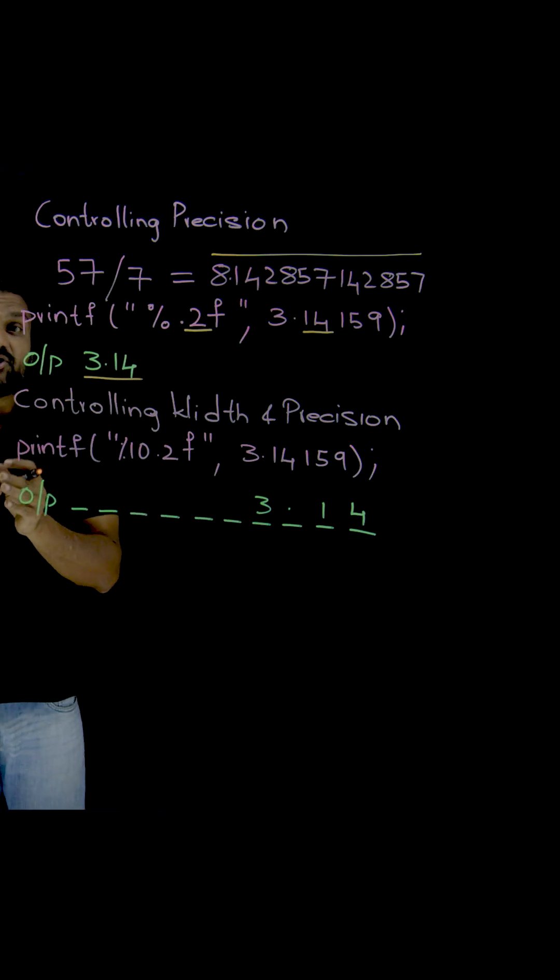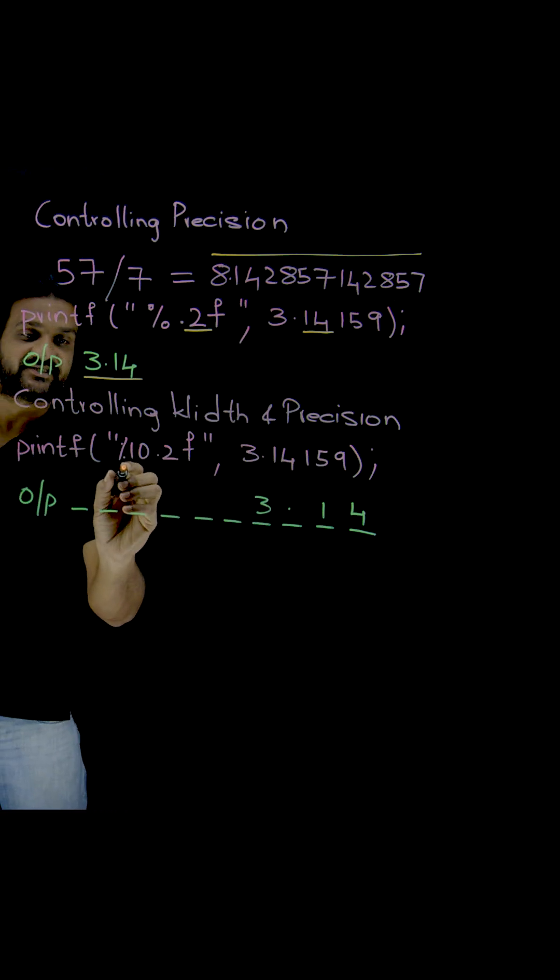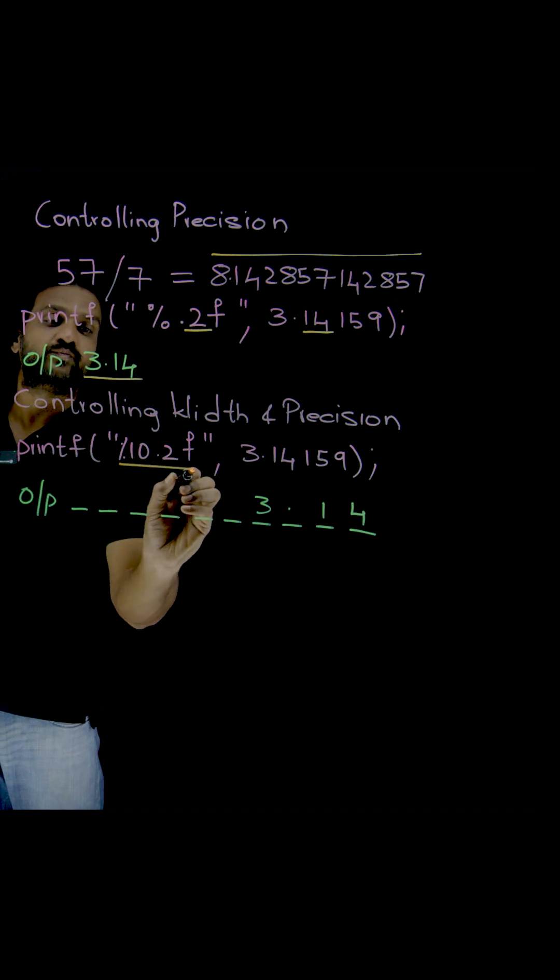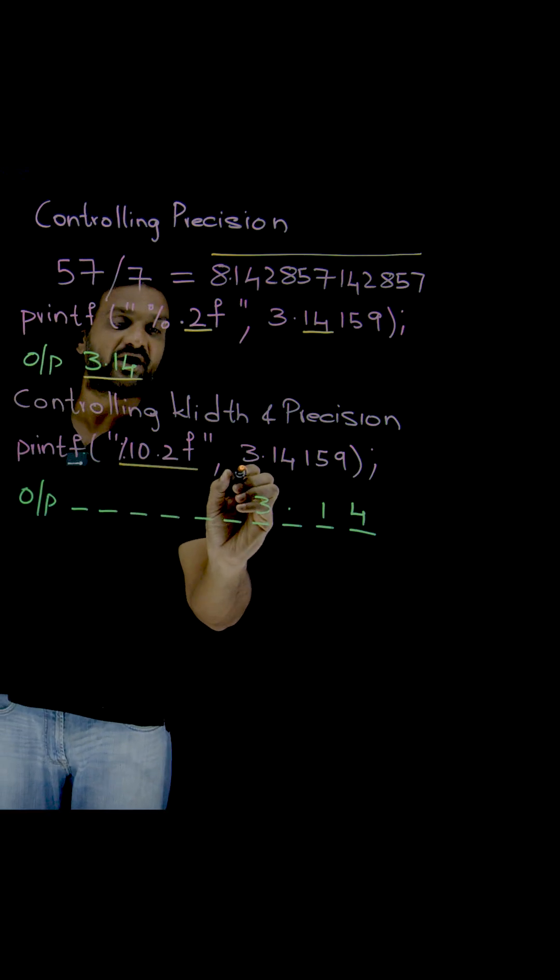Now, we can control both the width and the precision. How can that be done? See here, this is the example I have taken. It is 10.2. Percent 10.2f. And the outcome is...